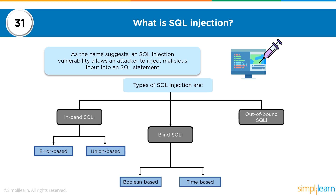There are various types of SQL injections: in-band SQL injection (error-based or union-based), blind SQL injection (boolean-based or time-based), and out-of-band SQL injection. Essentially, you're looking at application security where you want to encourage secure coding practices so that unvalidated input is mitigated.